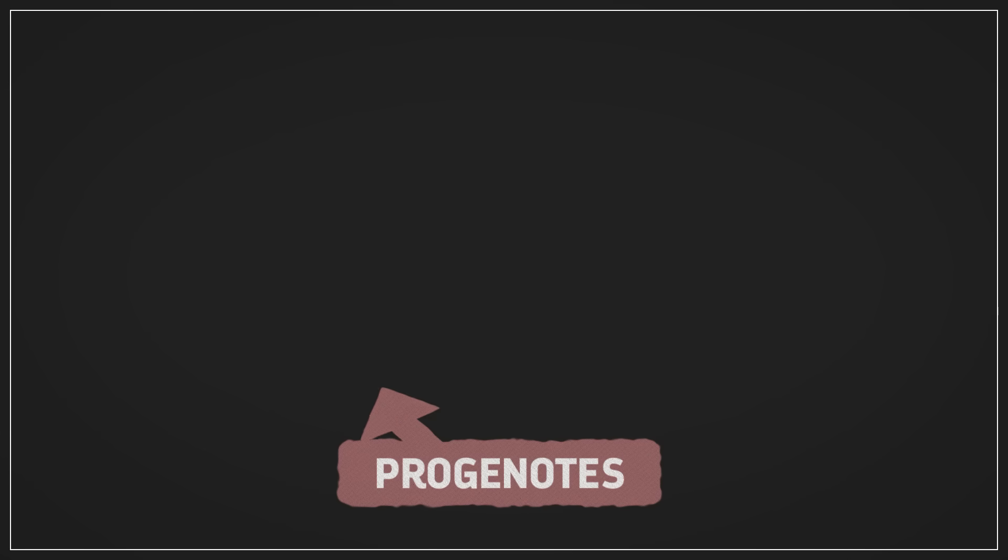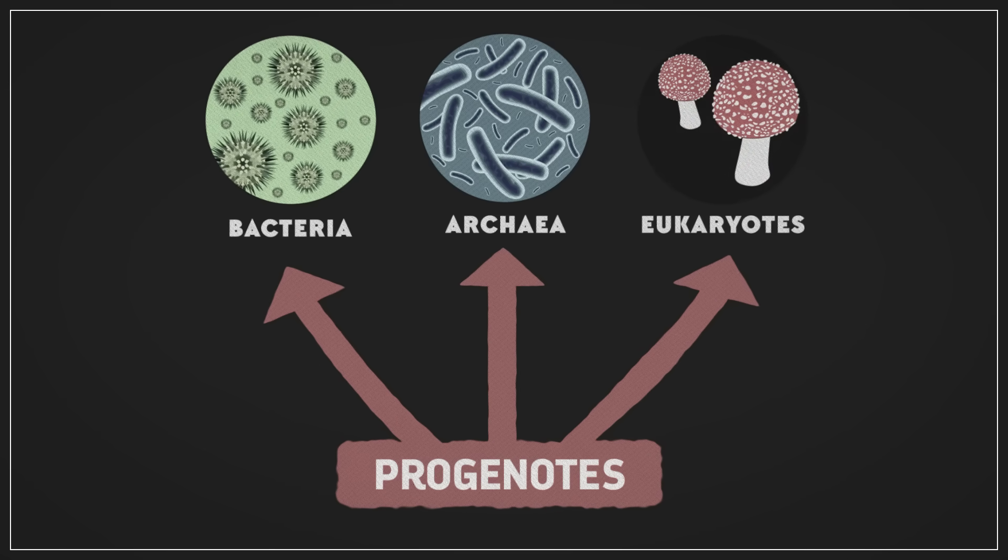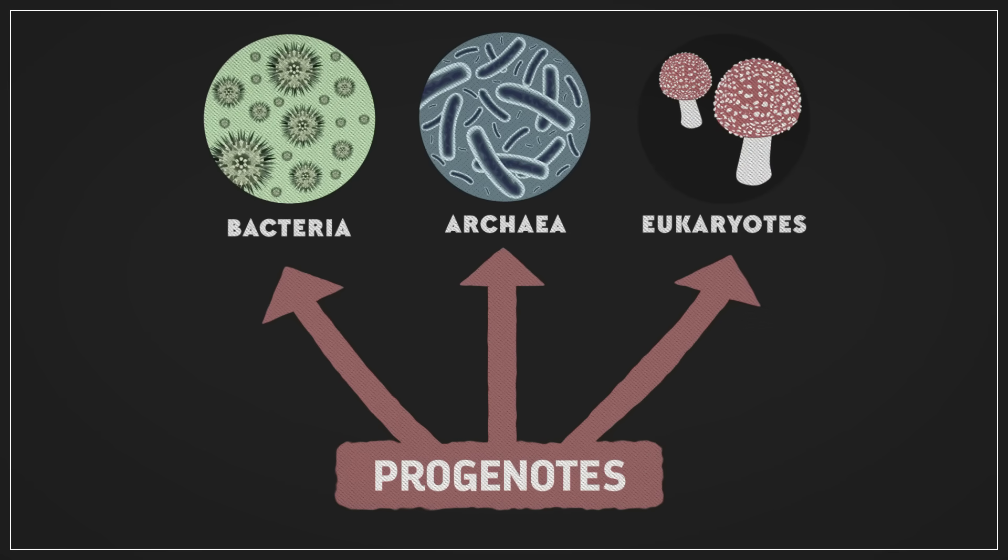So instead of being a specific organism or even a group of things, Woese thought that LUCA was the whole process by which progenotes acquired the genes to make these essential molecules. And from them would have come three lineages that evolved into modern bacteria, archaea, and us eukaryotes.